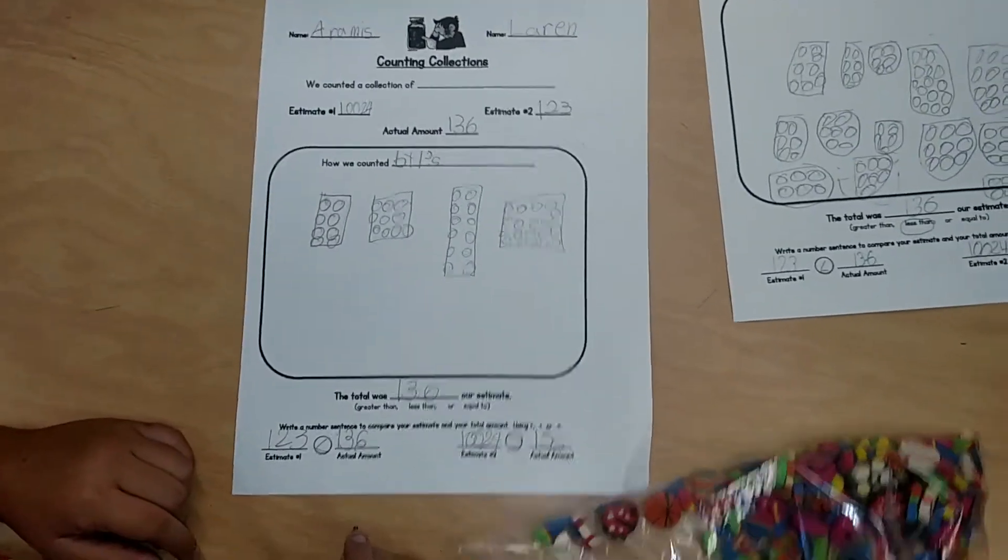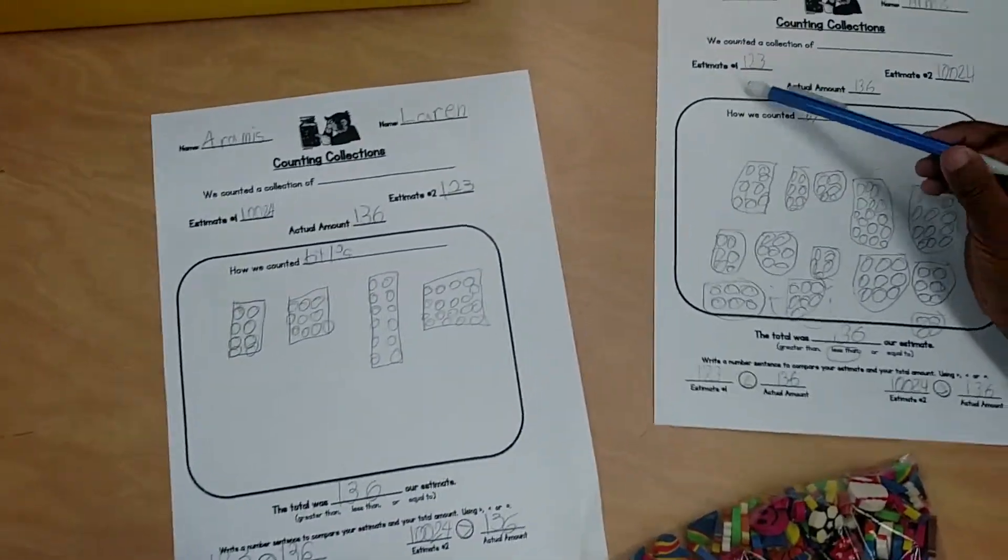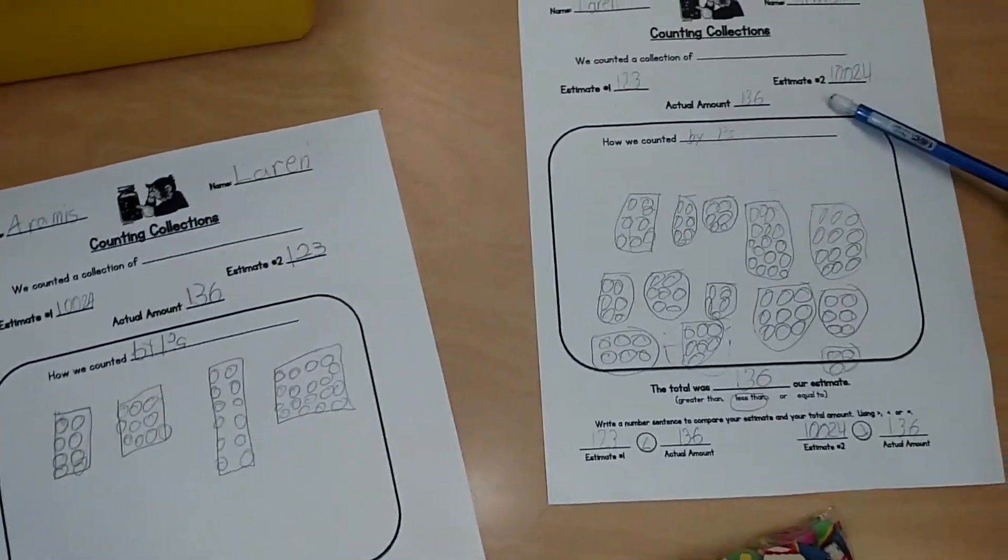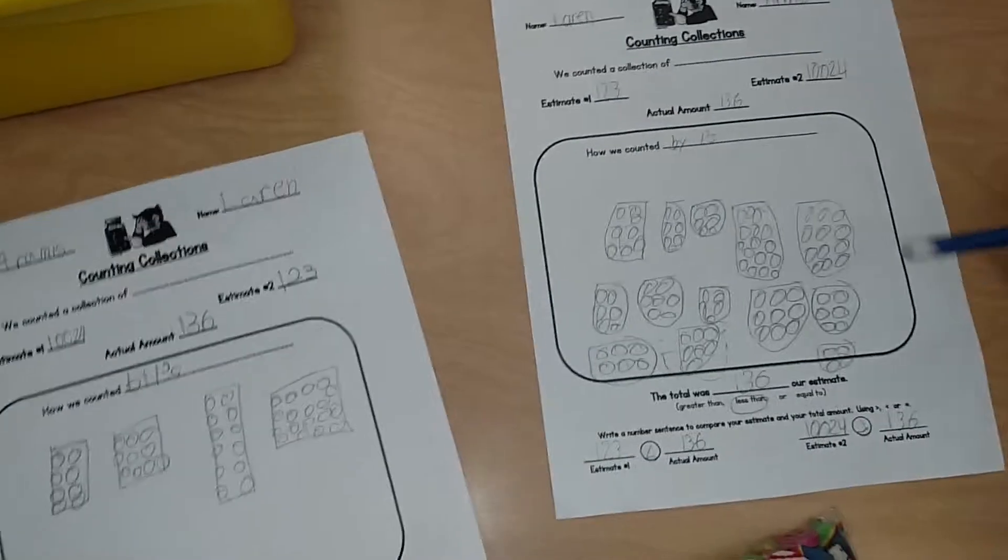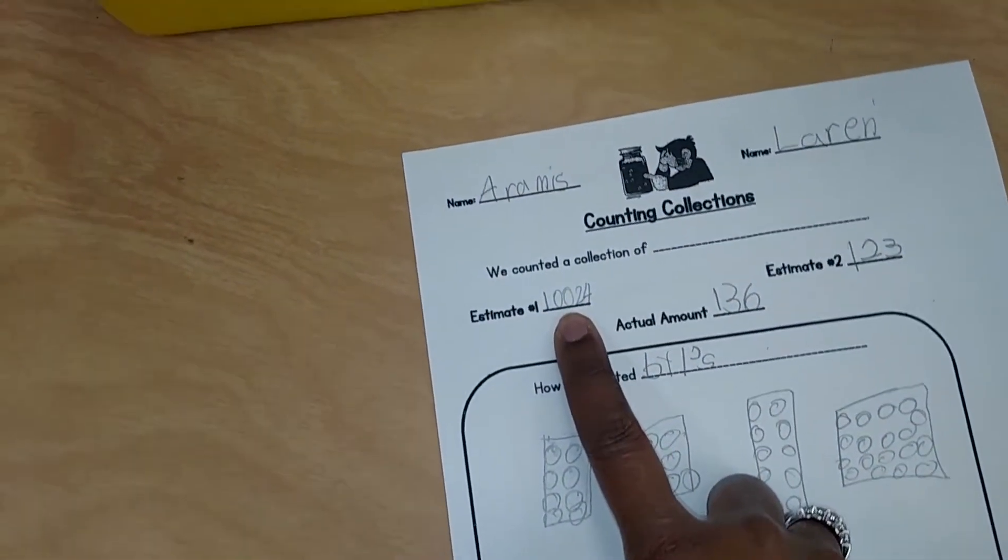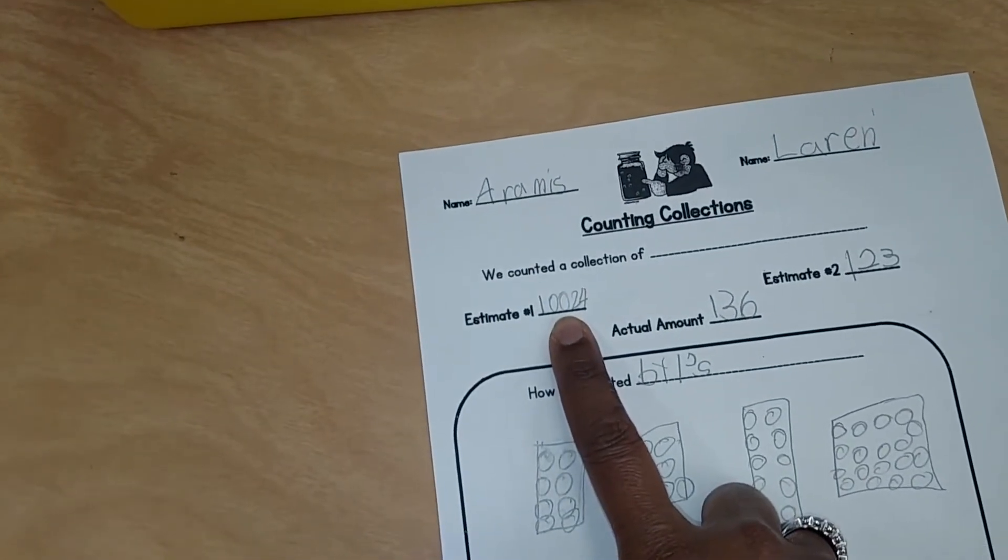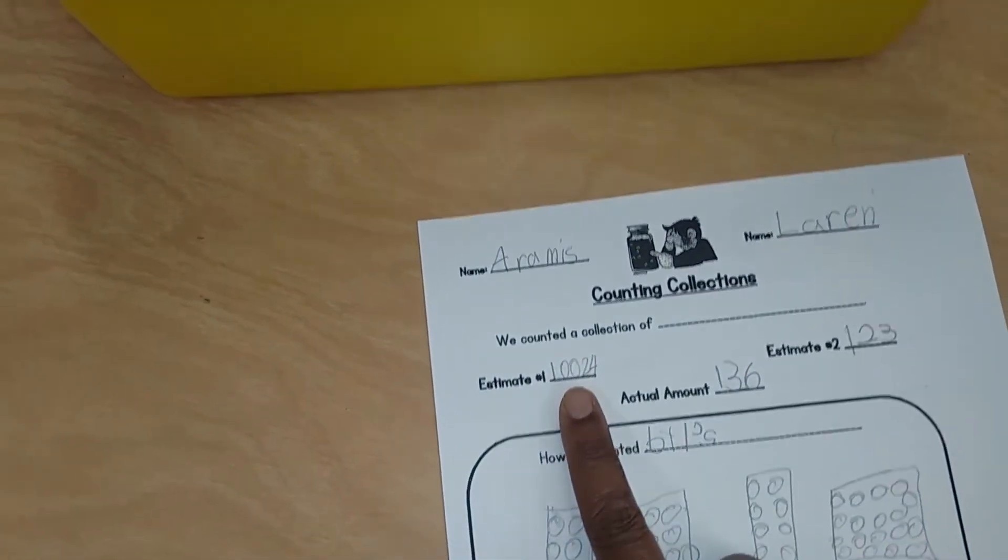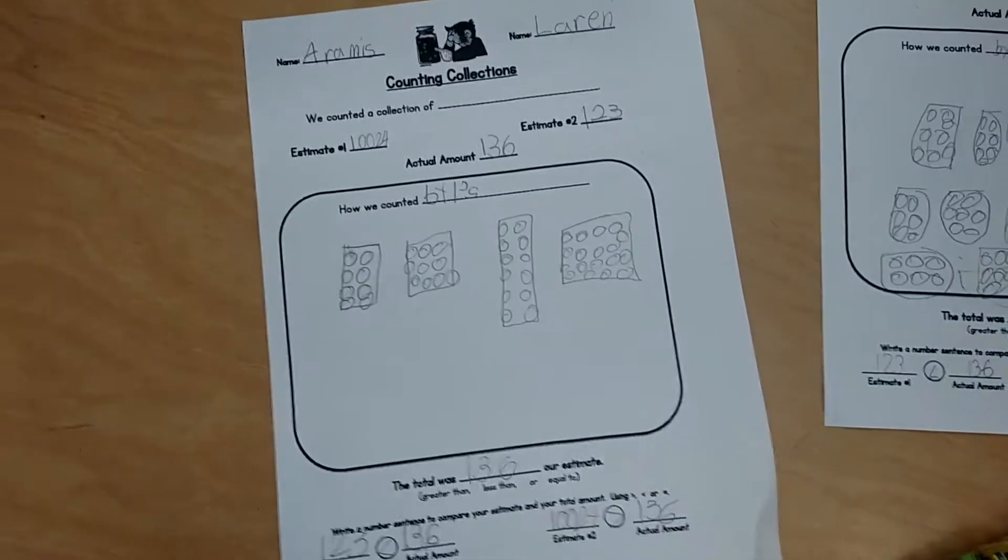And then my estimate was 123. Hers was 1,024. Is that 1,024 or is that 124? What did you mean to write Aramis? 1,024 or 124? 124. That's beautiful. That makes sense. We'll talk about that in a minute.